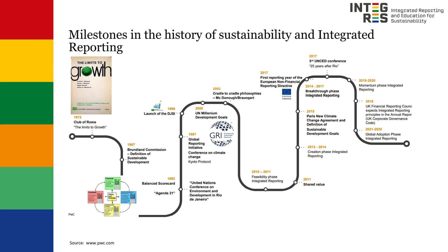In 1997, a new step was made with the foundation of the Global Reporting Initiative, the GRI. It is an independent organization that provides the world's most widely used sustainability reporting standards. Many companies publish a sustainability report using the GRI standards. Some companies do this because of the pressure from different stakeholder groups to be more transparent about their environmental, economic and social impacts.